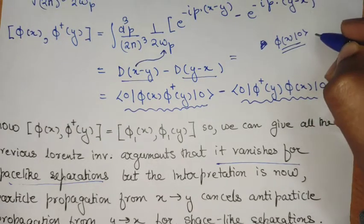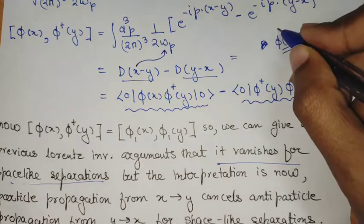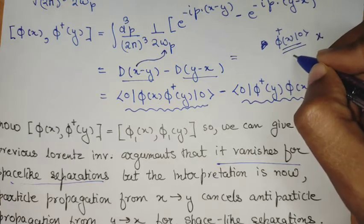But phi dagger, phi dagger x acting on zero is like creating an anti-particle at location x.